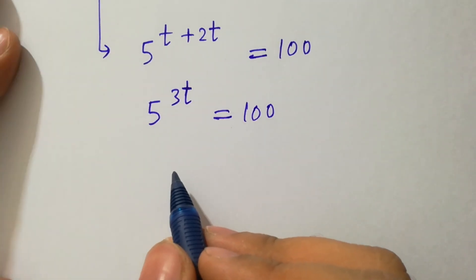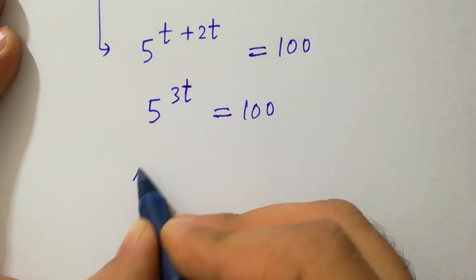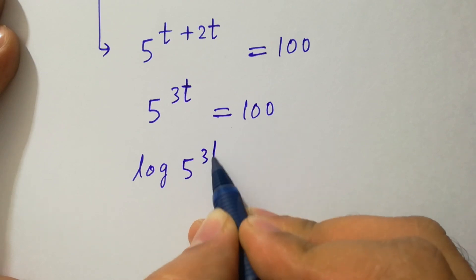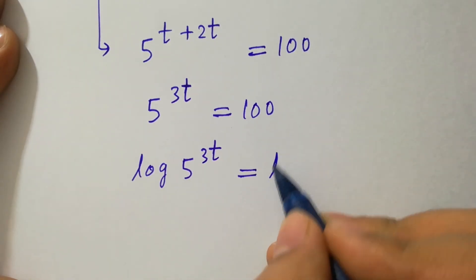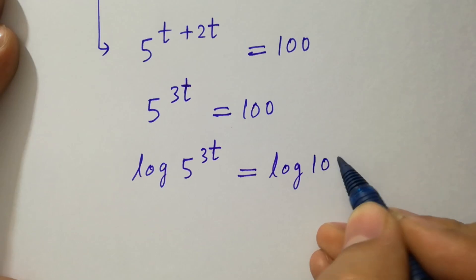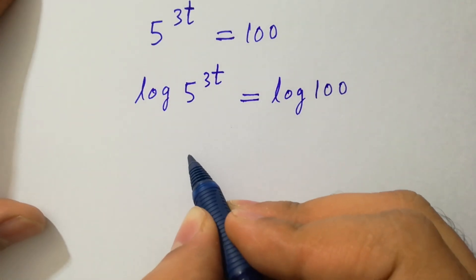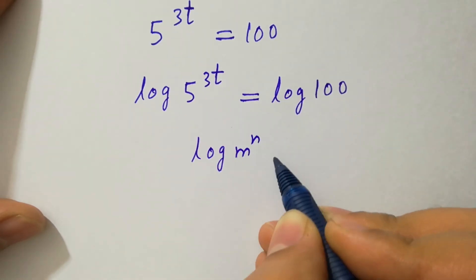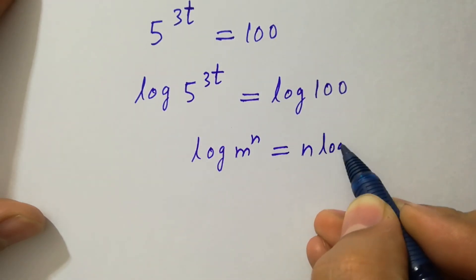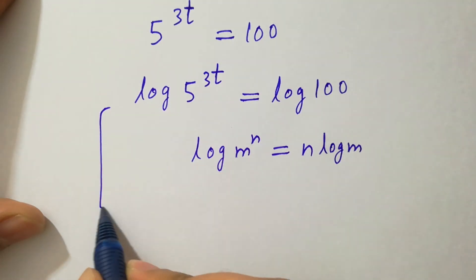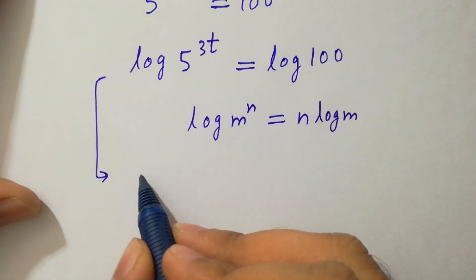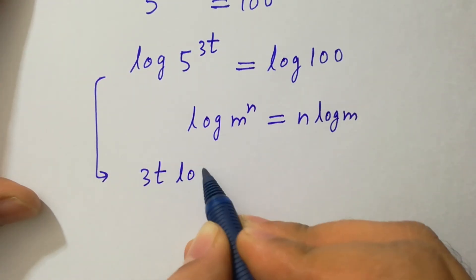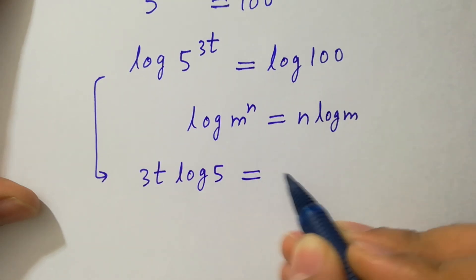To solve this, take log on both sides. Log 5 to the power 3t equals log 100. Since log m to the power n equals n log m, it will be 3t log 5 equals log 100.